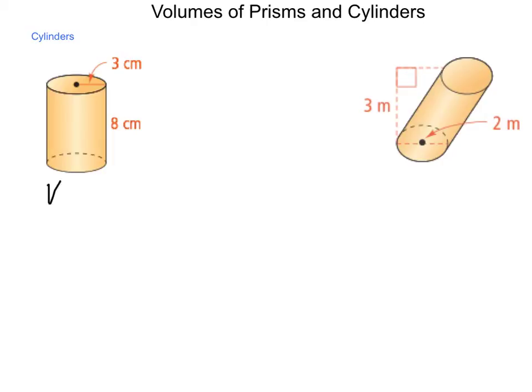Volume for the cylinder on the left is pi times the radius squared times the height. So we have pi times three squared times eight. Multiplication we can carry out from left to right.